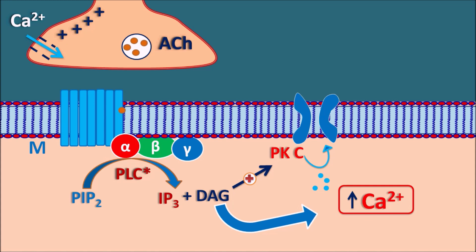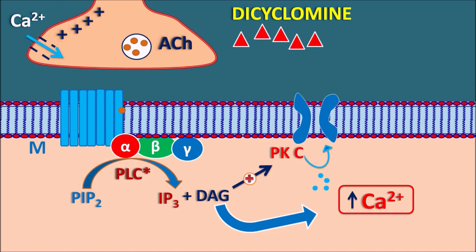In this way, acetylcholine increases intracellular calcium levels within the GI smooth muscle, resulting in contraction. Dicyclamine acts as an antagonist at the acetylcholine receptors — it is a competitive antagonist. It binds to the muscarinic receptors such that these receptors are inactivated, thereby preventing the binding of acetylcholine to the muscarinic receptors and preventing GI smooth muscle contraction.